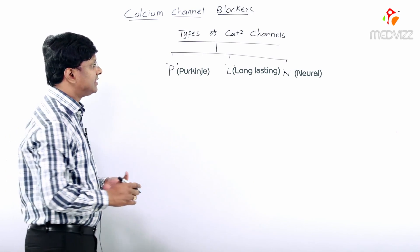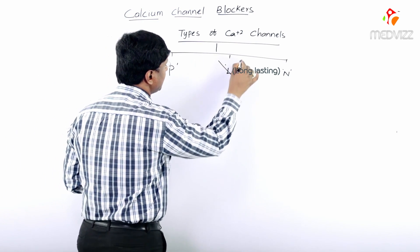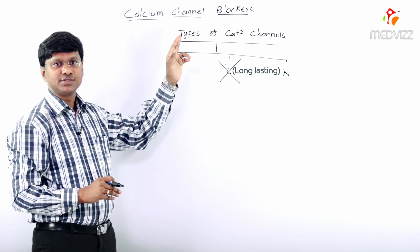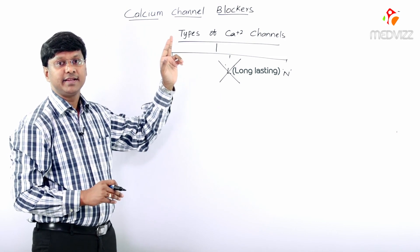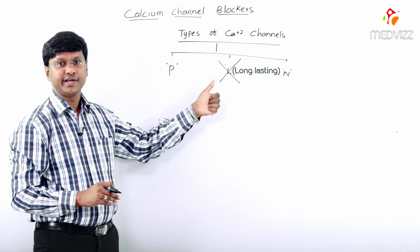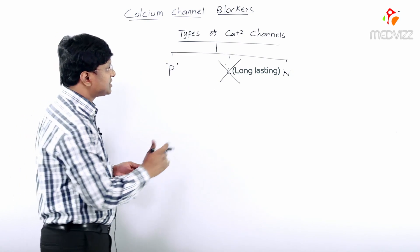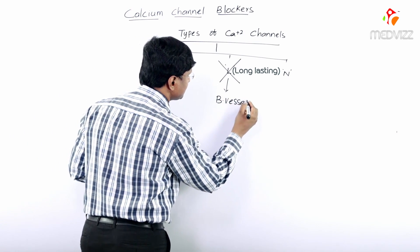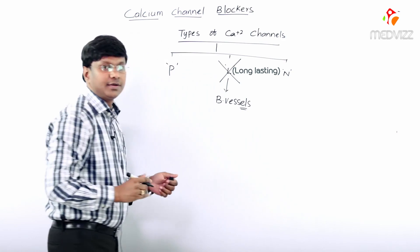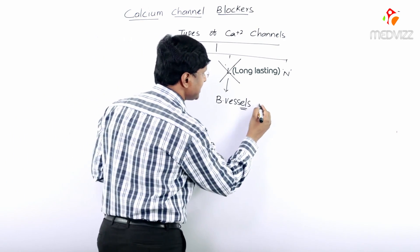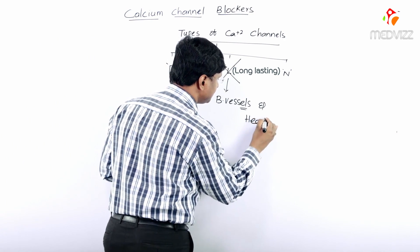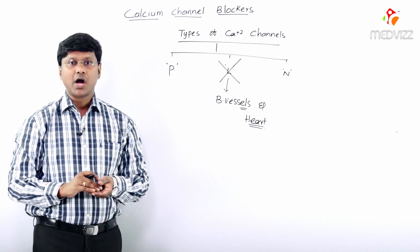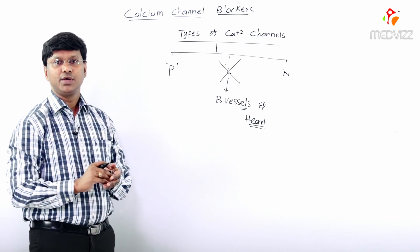The calcium channel blockers used as antihypertensives mainly block the L type of voltage-gated calcium channels. These L-type voltage-gated calcium channels are present in the blood vessels as well as in the heart.